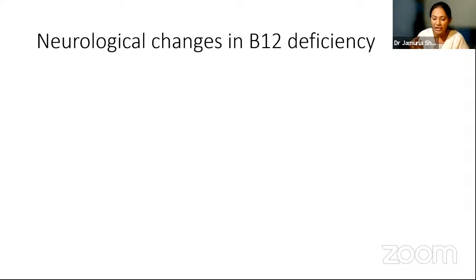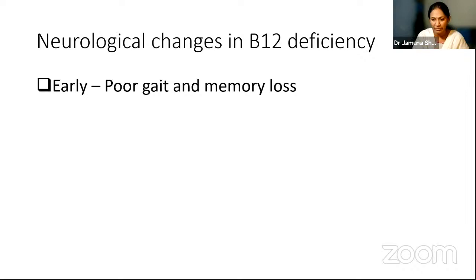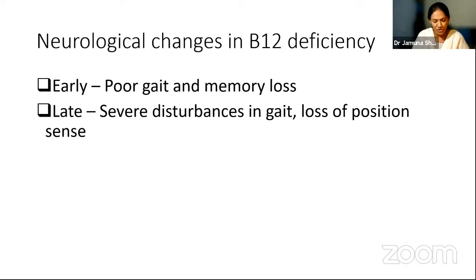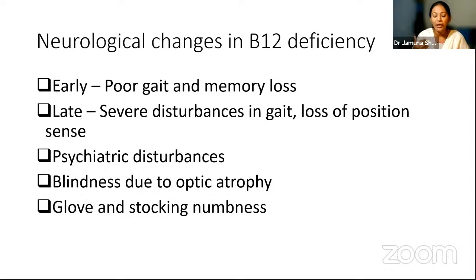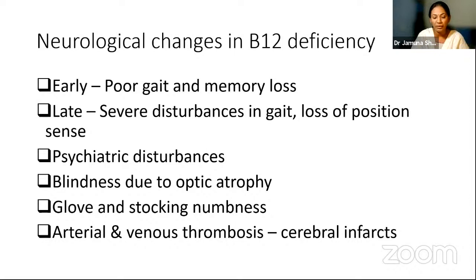We need to know the neurological changes in vitamin B12 deficiency. Early changes include poor gait and memory loss. Later there will be severe disturbances in gait, loss of position sense, and psychiatric disturbances — called cobalamine madness — though with injectable vitamin B12 available today, this is rare. There can also be blindness due to optic atrophy. The typical numbness in B12 deficiency is called glove and stocking neuropathy, where the person complains of numbness in the hands and feet. Another important neurological manifestation is arterial and venous thrombosis due to elevated levels of homocysteine, leading to cerebral infarcts. All other features besides cerebral infarcts are components of subacute combined degeneration of the spinal cord.